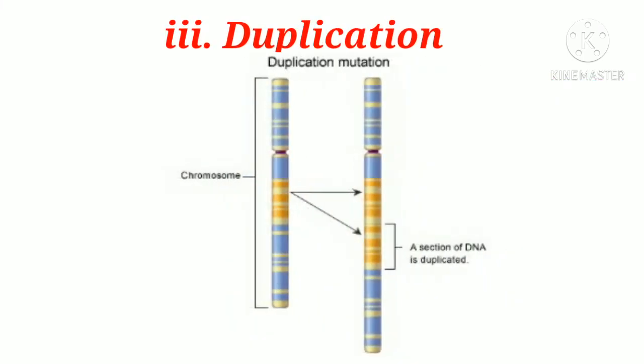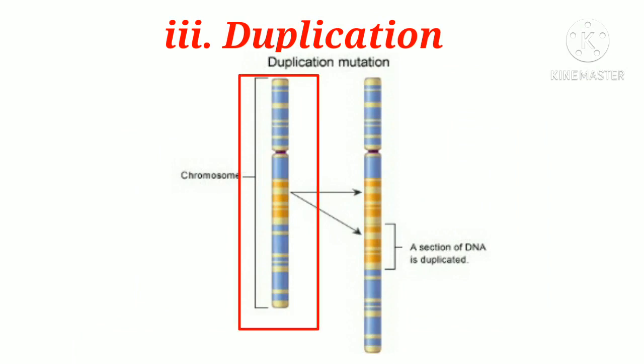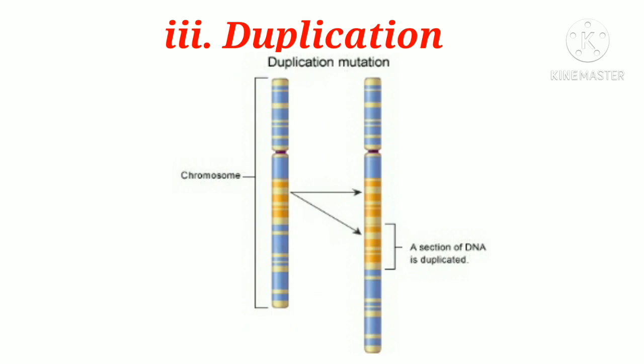Here in this figure, a chromosome and a section of that chromosome is duplicated. This type of mutation is known as a chromosomal duplication mutation.